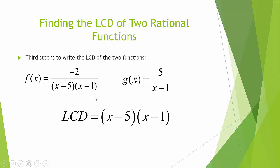To find the LCD, we multiply together the distinct prime factors, which would be x minus 5 times x minus 1. This is the LCD between f of x and g of x, and completes our problem.